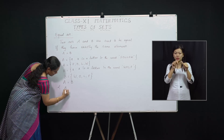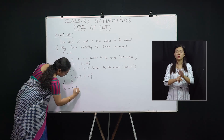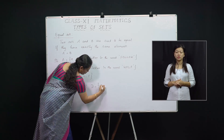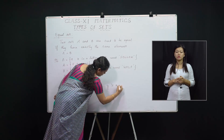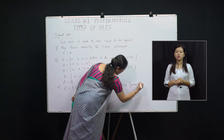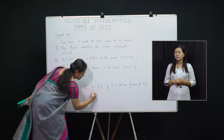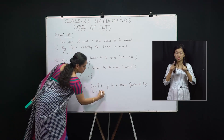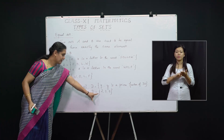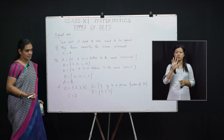One more example: C = {2, 3, 5} and D is the set of all y such that y is a prime factor of 30. The prime factors of 30 are 2, 3, 5. These two sets have exactly the same elements, therefore C = D.